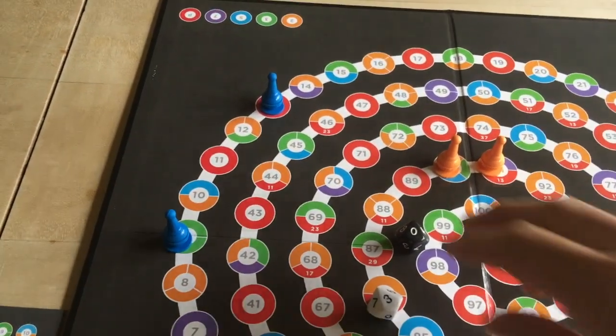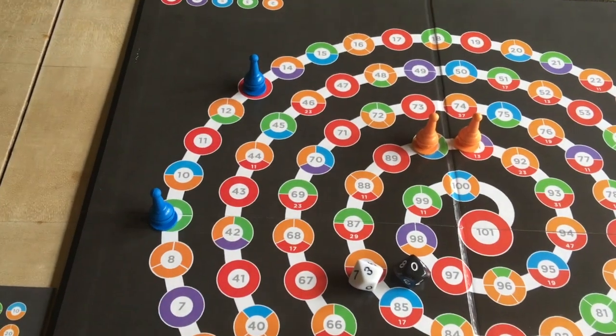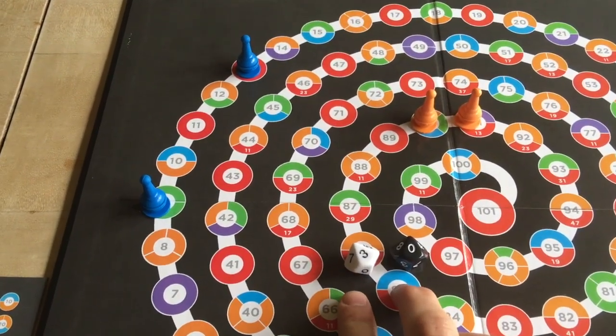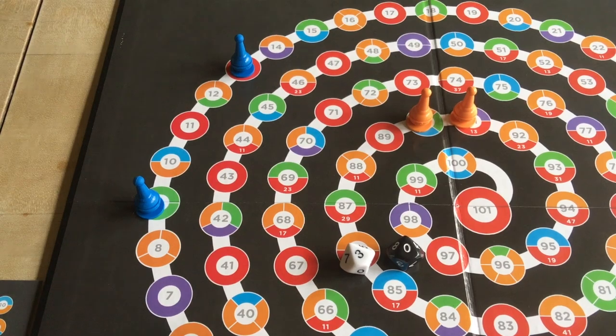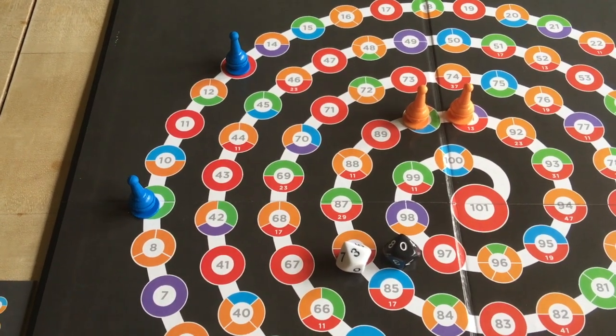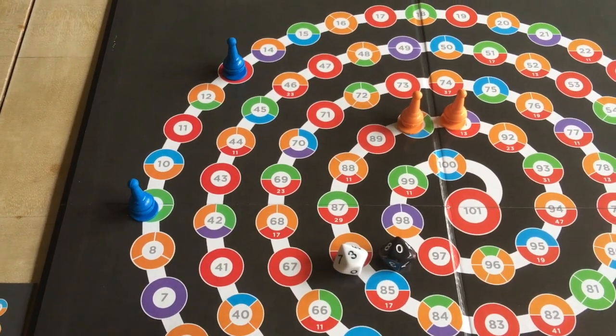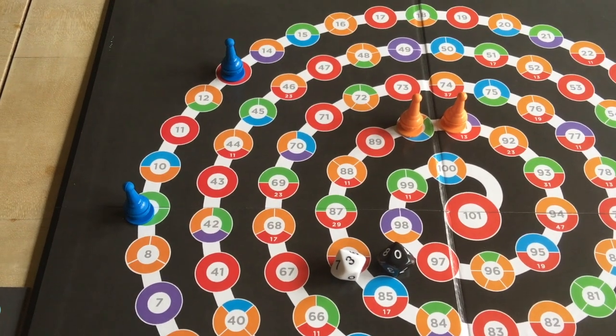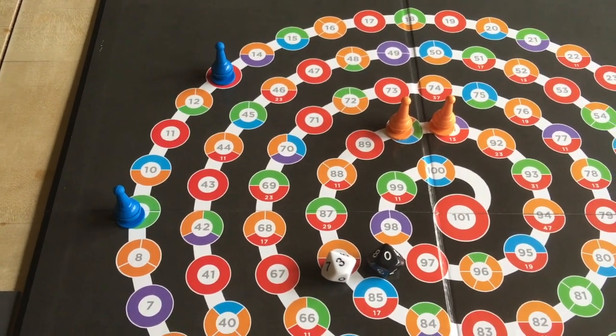One really important thing to note about these dice is that if I had rolled a 10 and a 3, that's not a 13. I don't get to multiply times 13 or add 13. It's really two separate rolls that I apply separately by adding, subtracting, multiplying, or dividing.